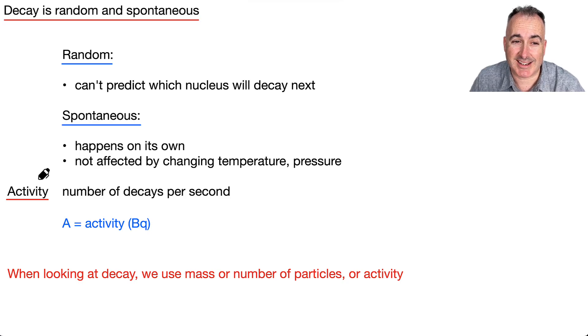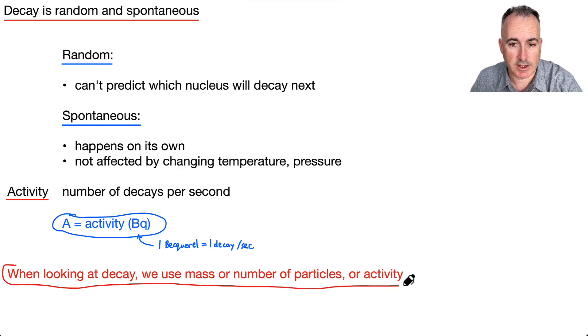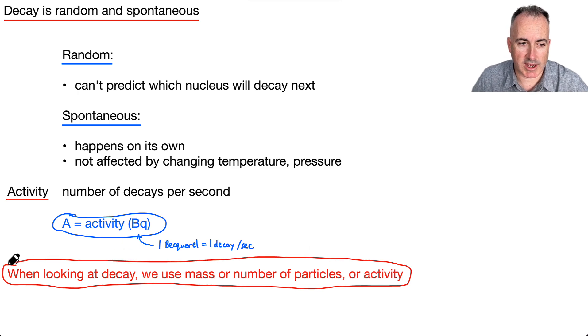We have this quantity called activity. Activity is defined as the number of decays per second. We say A is the letter we use, and it's measured in a unit called a becquerel, which is just a decay per second. When we're looking at decay, there's going to be a few different things that could be happening. We could have mass, that's M, we could have the number of particles, that's N, or it could be the activity, which is A. Any of these will actually work just fine when we're working with this stuff. So when we're doing graphs or how much is remaining, we're going to consider all three at the same time: mass, number of particles, or activity. They're all going to work in the same way as far as these graphs are concerned and working with half-life.